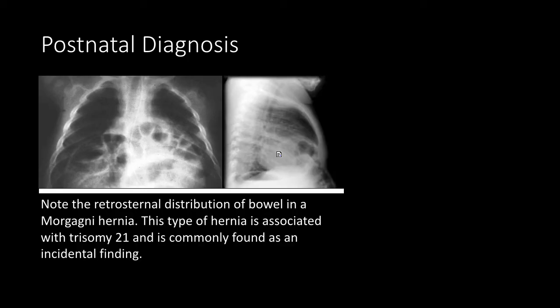The other type of hernia — the Morgagni hernia — occurs in the retrosternal area. This type of hernia is best appreciated in the lateral view, showing the retrosternal distribution of bowel. This type of hernia is also associated with trisomy 21 and is commonly found as an incidental finding.